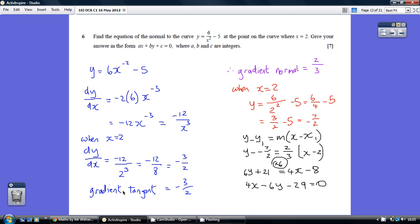So the gradient of the tangent to the curve when x equals 2 is minus 3 over 2. But we don't want to work out the equation of the tangent. We need to work out the equation of the normal. So we need the gradient of the normal, we flip this over and change the sign, giving us 2 thirds.